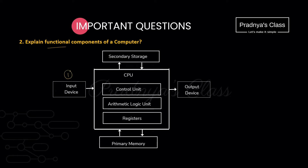The first component is input devices, which is responsible for taking input. The second component is output device, which is used for displaying output. The third and most important component is CPU — we know that it is the brain of the computer, which is further divided into three units.